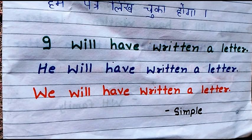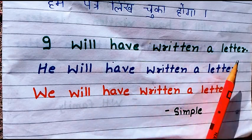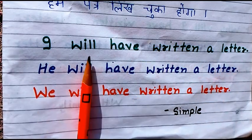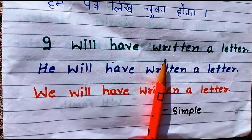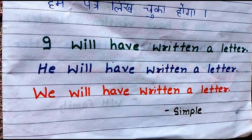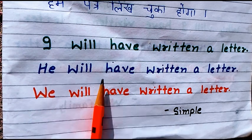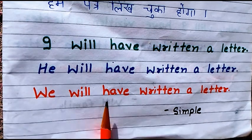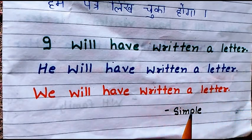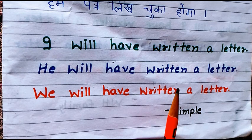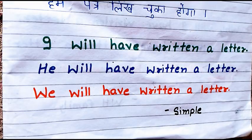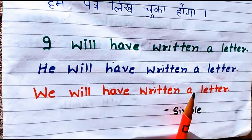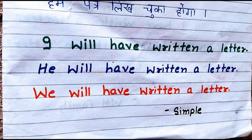Now we will form a sentence with the help of rules. 'I will have written a letter.' According to the rule: first we use the subject, then helping verb 'will', then 'have', then the third form — write, wrote, written — so we use 'written'. Last we use the object 'a letter'. Similarly, 'We will have written a letter.' There is no problem with singular and plural in this structure. This is the simple rule of future perfect tense.